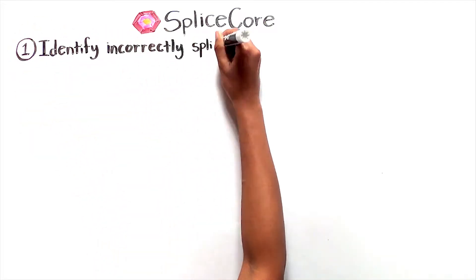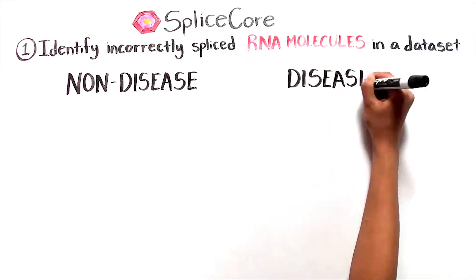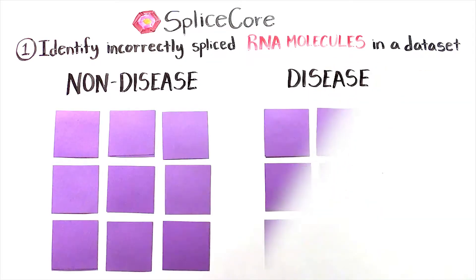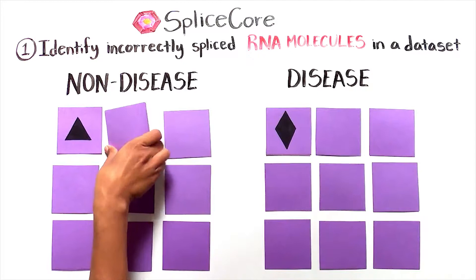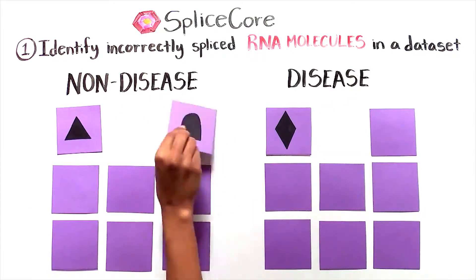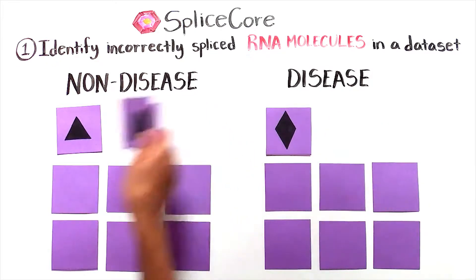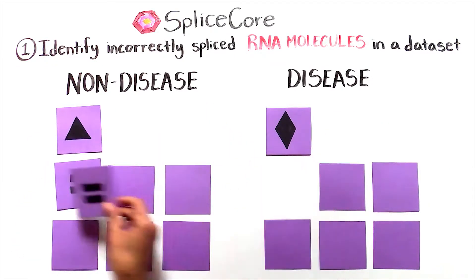The first step is to identify incorrectly spliced RNA molecules within a dataset. To do this, sequenced RNA data from patients is compared to our database of over 5 million RNA splicing events. Think of this process as a card matching game. The cards on the left represent RNA from healthy subjects, and the cards on the right represent RNA from patients, with each card representing a particular RNA molecule.